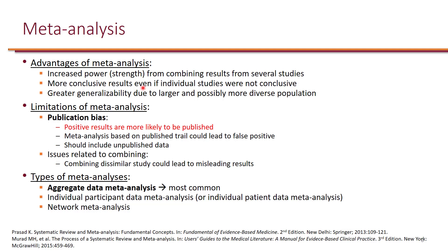Because the sample size will be larger, this also results in improved external validity. However, there are limitations to meta-analysis. The biggest limitation is publication bias. In general, positive results are more likely to be published. If a study found a difference, it is more likely to be published than one that did not. When conducting meta-analysis, those unpublished studies may not be found, which can result in a false positive when the studies are combined.